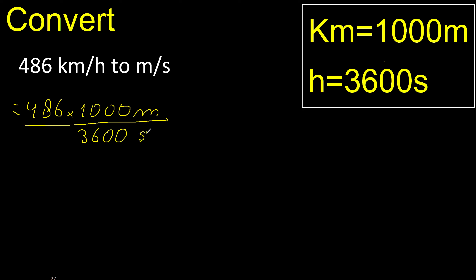The last digit is 0, eliminate. This can be simplified because it can be divided by the same number. 10 divided by 2 is 5, 36 divided by 2 is 18.